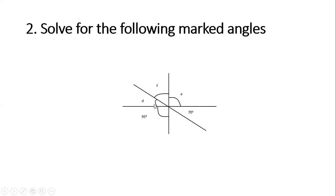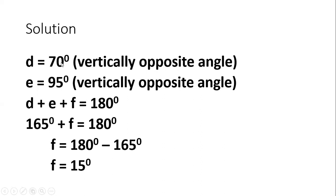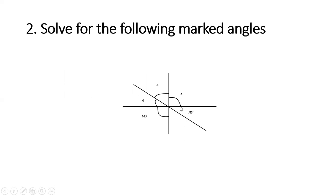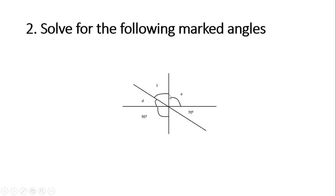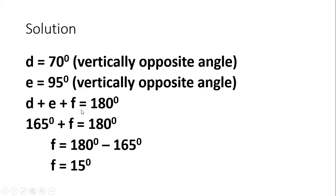Another example: we have to find angles d, e, and f. Angle d and 70 degrees are vertically opposite, so d equals 70 degrees. Similarly, angle e is vertically opposite to 95 degrees, so e equals 95 degrees. Then, d plus e plus f equals 180 degrees — sum of angles on a straight line. Substituting, 70 plus 95 plus f equals 180, so 165 plus f equals 180, giving f equals 15 degrees.